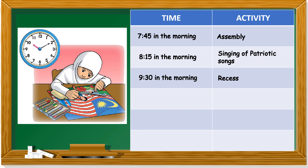The hour hand points just after ten. The minute hand points to two. Two times five is ten. So it's 10:10 in the morning. What is she doing? She's coloring Jalur Gemilang — Jalur Gemilang is the name of our national flag, nama bendera Malaysia.